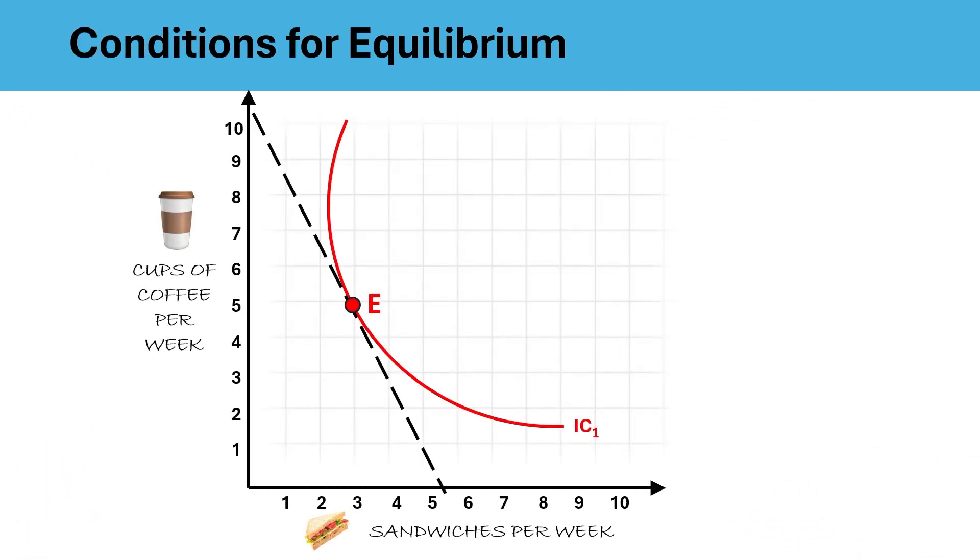For a consumer to be in equilibrium, two important conditions must be met. The first condition is that slope of IC should be equal to the slope of budget line. MRS equals to PX upon PY or MRE. In case you want to understand how to calculate the slopes of both the IC and budget lines, you must check out my previous MRS videos, the links to which have been added in the description box.